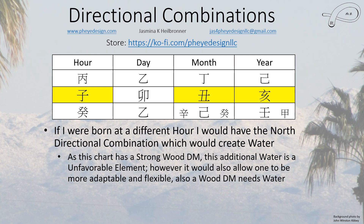Since this is a strong day master, this additional water is an unfavorable element. However, it would allow me to be more flexible and adaptable, and the wood day master does need water, so it's maybe not as detrimental as it might otherwise be. On the Joey Yap analysis, this would really increase the yin water in the chart, putting both yin water and yang water in unhealthy high categories — right now only yang water is in an unhealthy high category.